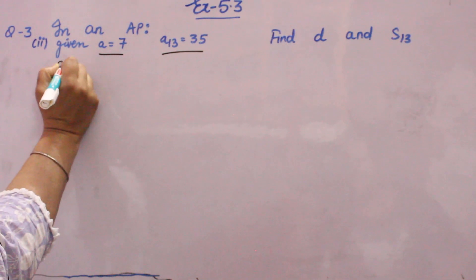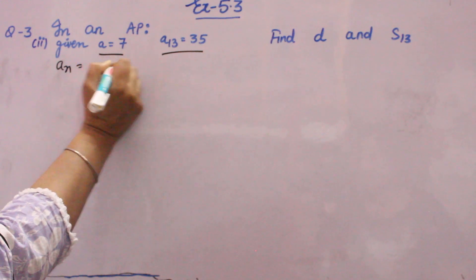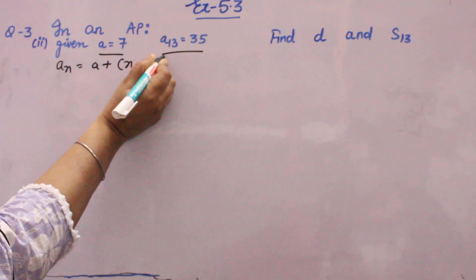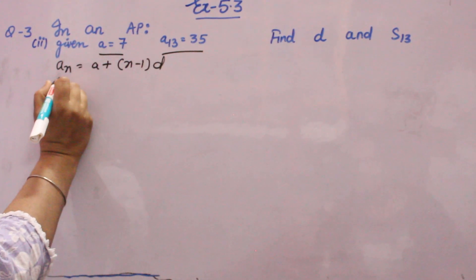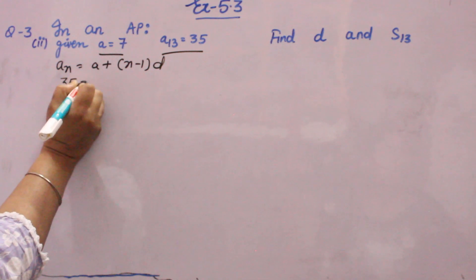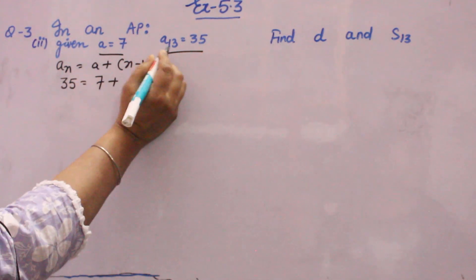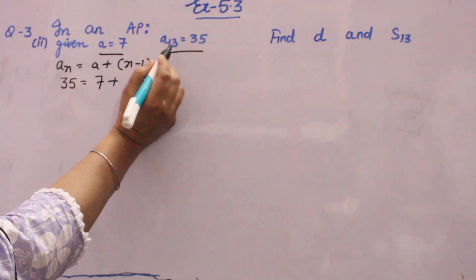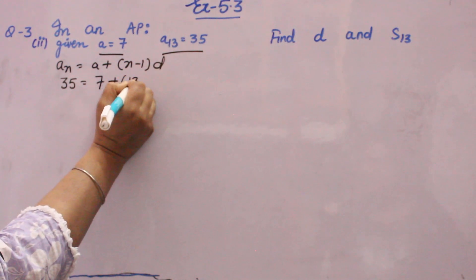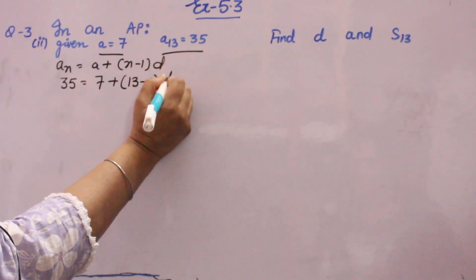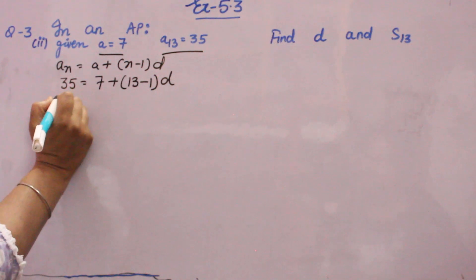So firstly, you write the formula: Aₙ is equal to A plus (N minus 1) into D. Aₙ value is 35, so you will write here 35. A is 7, N is 13 because Aₙ, in place of N, 13 is there. So you write 13 minus 1, D you will write as it is because you have to find it.